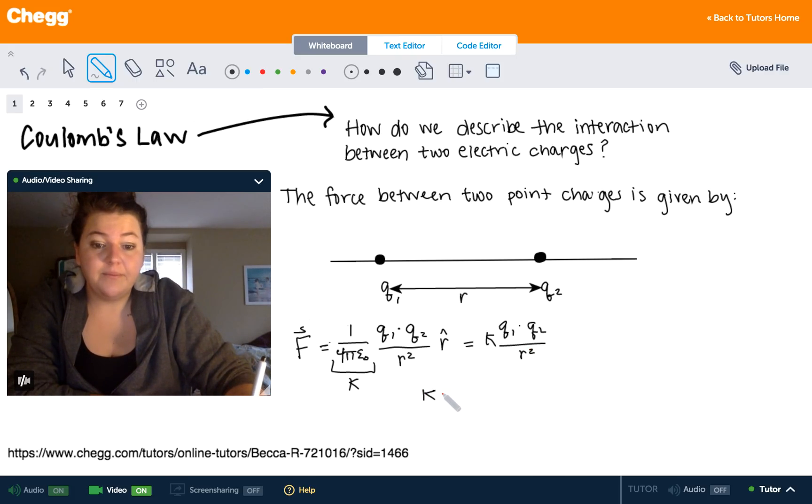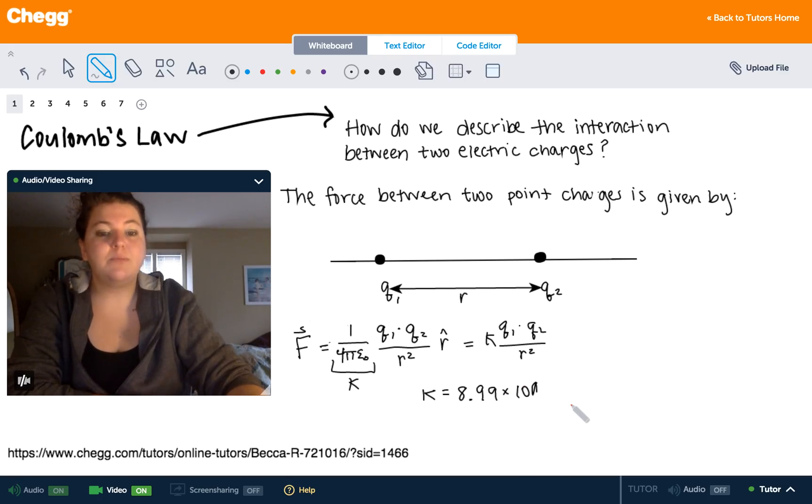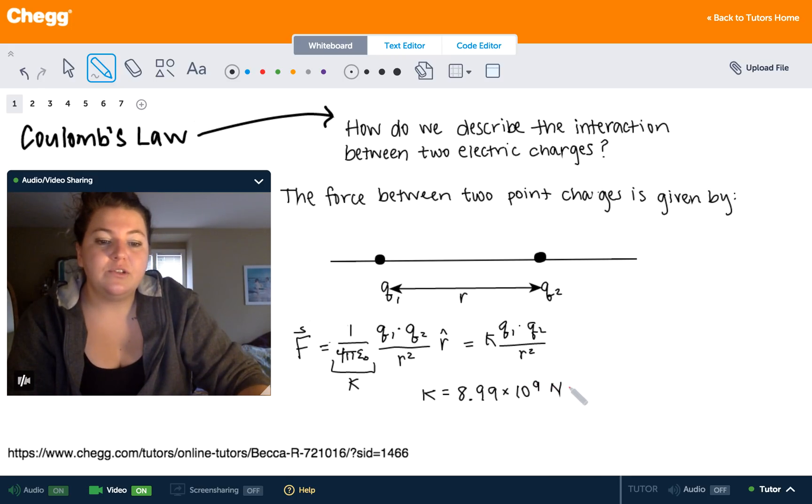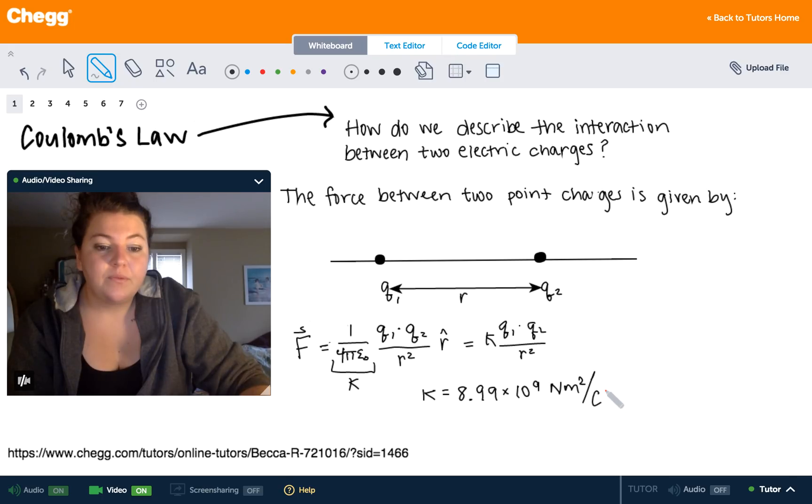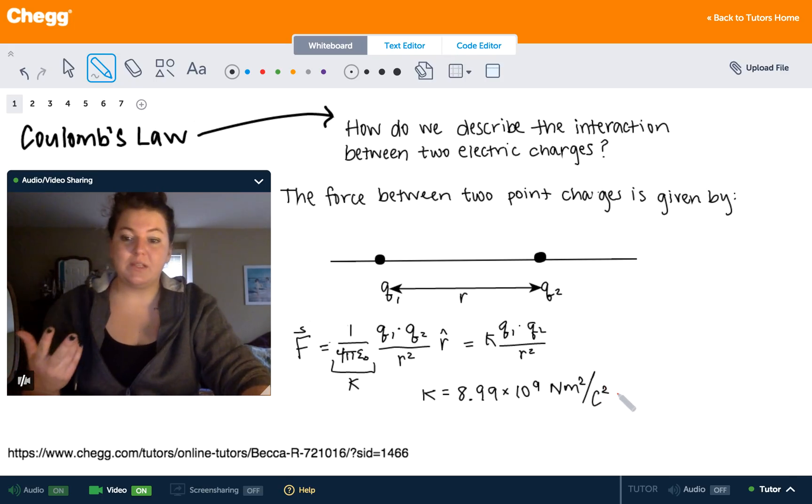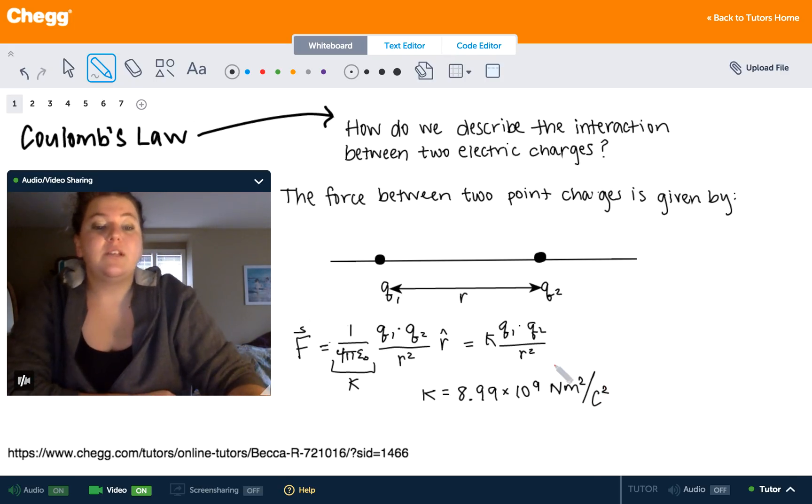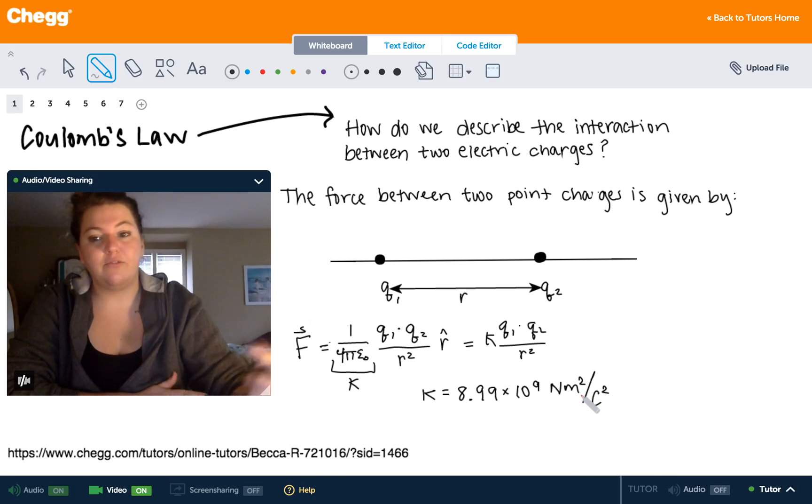Now k, the value for k, is a known constant. Usually you don't have to memorize this for tests. It's generally given but just in case it's approximately 8.99 times 10 to the 9th. And what's important here are the units for k. So the units are kind of funny. They're given as newtons which is our force unit times meters squared, meters being our distance unit, all divided by coulombs squared. So as long as our charges are in coulombs, our distances are in meters, we're going to get a force that is in newtons and that's pretty standard units for now.